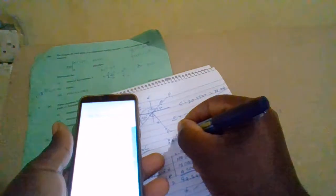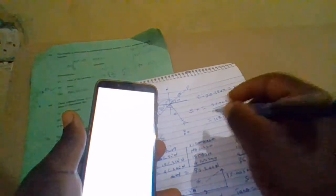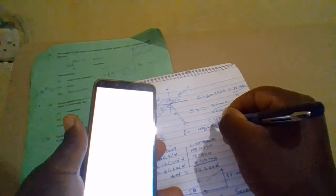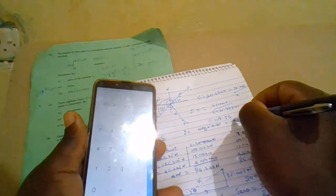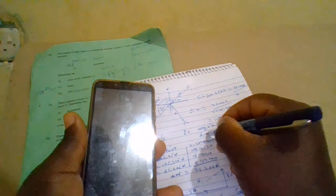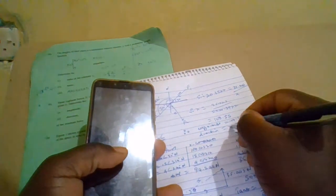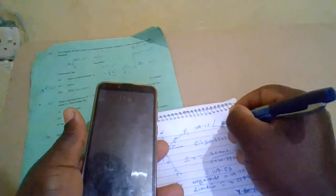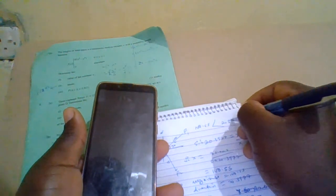Therefore, the resultant magnitude would be equal to 100.55. Direction equals to 20.3977. We can now combine the two and write them as 100.55 at 20.3977 newtons.